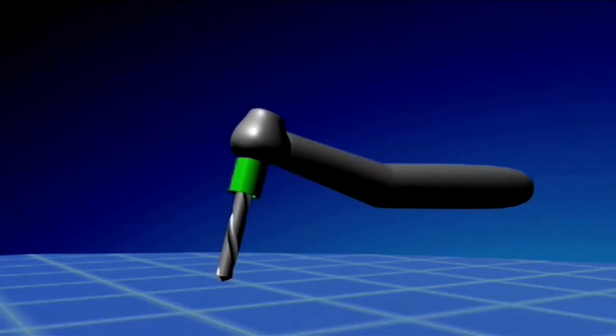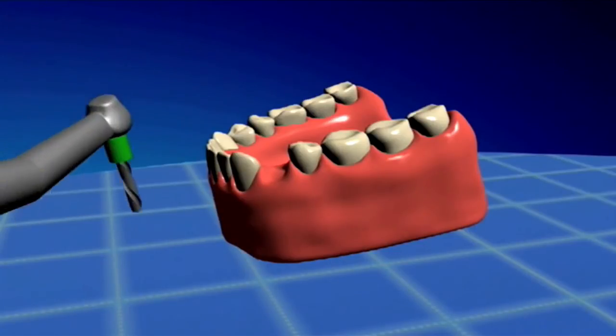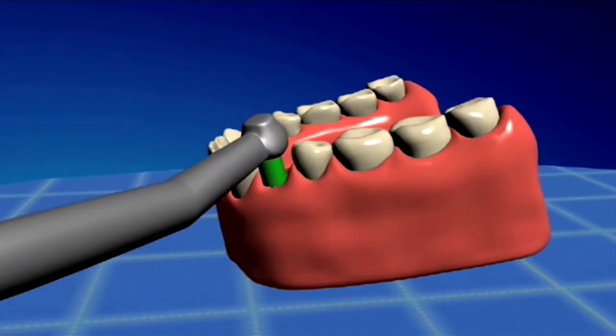A surprising benefit is the help the drill stop cylinder is in orienting the initial penetration. It is the approximate size of the future healing abutment and aids in visualizing the restorative position.